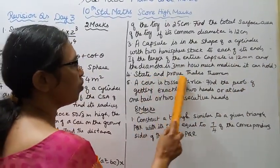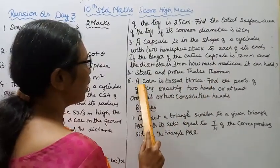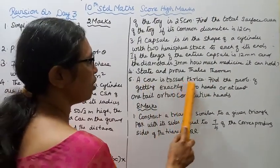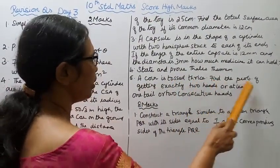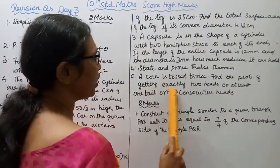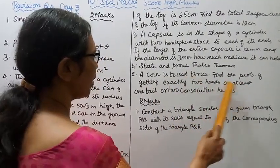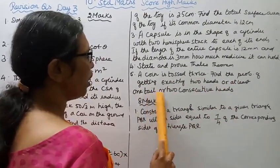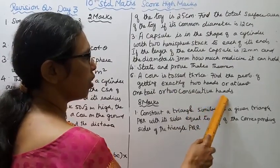Fourth, state and prove Thales' theorem. Fifth, a coin is tossed thrice. Find the probability of getting exactly 2 heads, or at least 1 tail, or 2 consecutive heads.